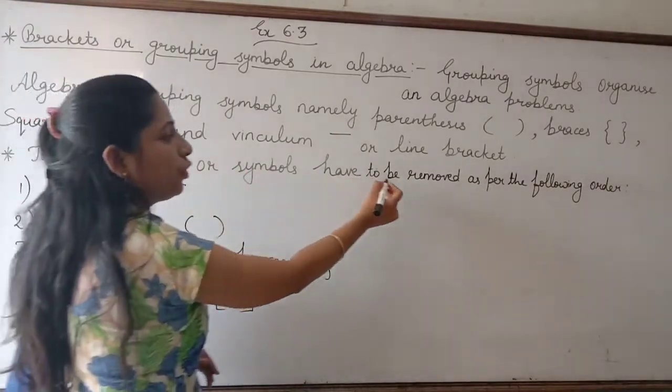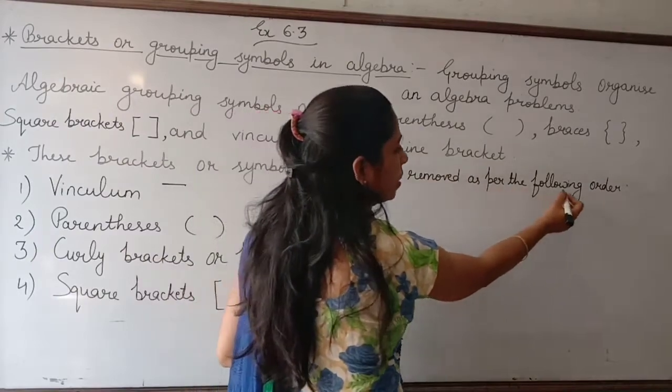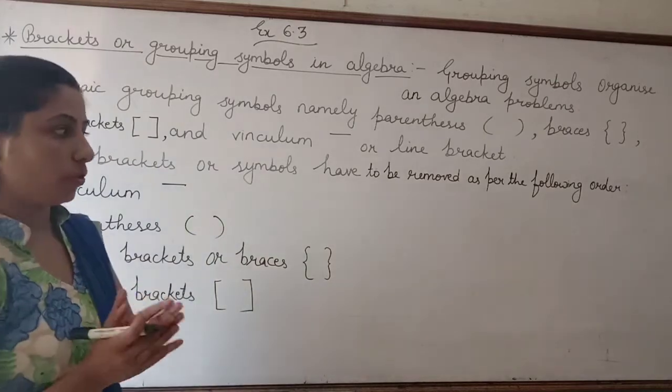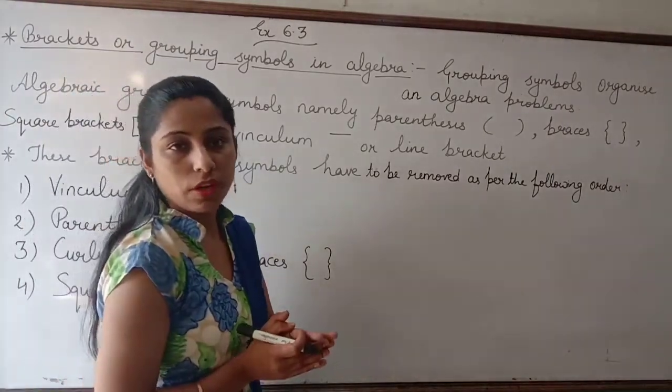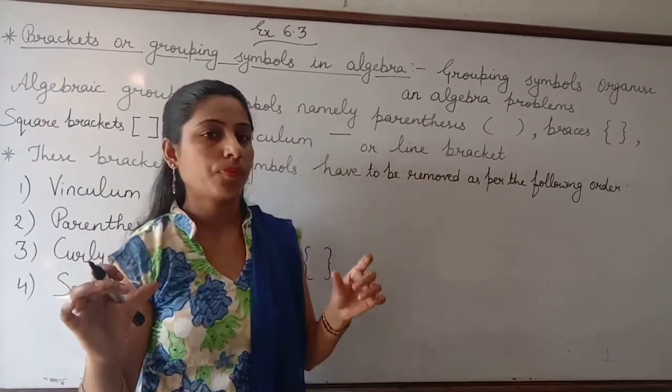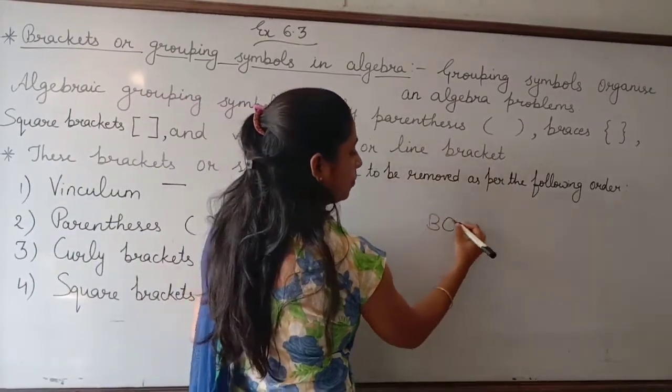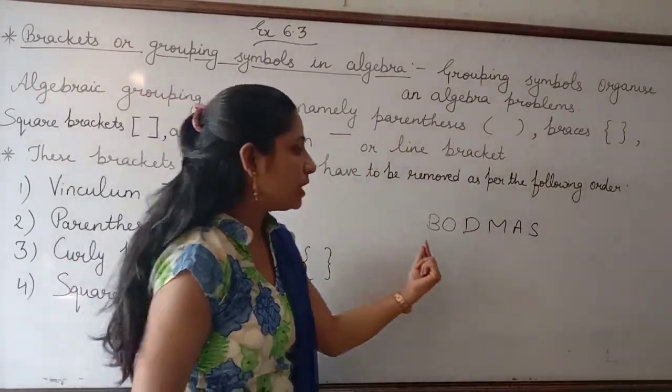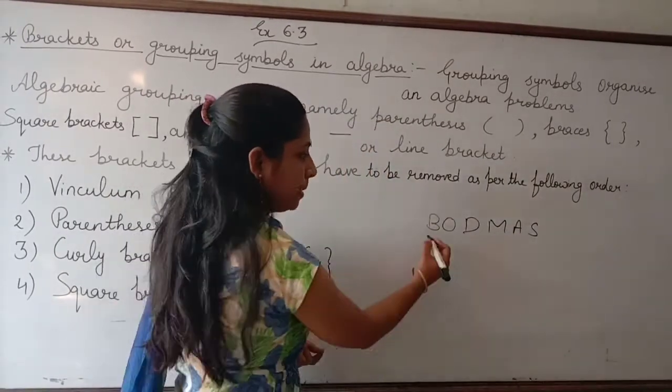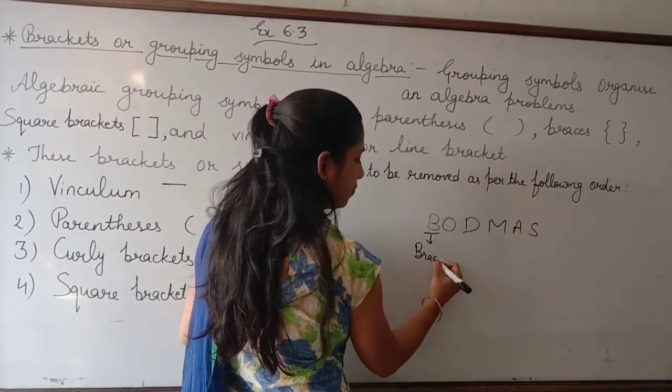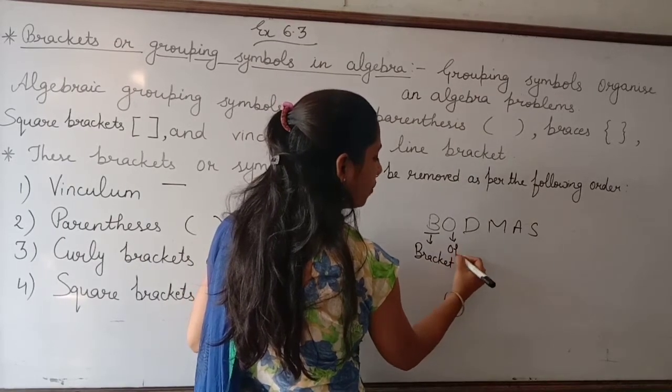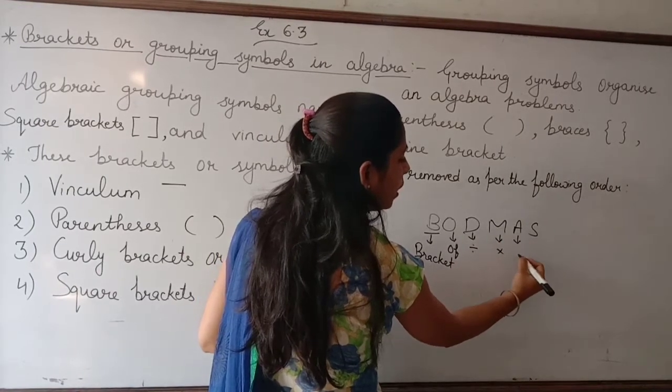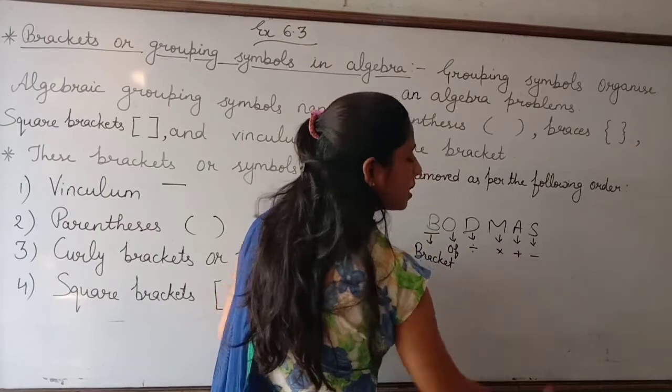These brackets or symbols have to be removed as per the following order. If we have board marks for questions, there is a sequence. These questions follow the order of operations: Bracket, O, D, B - Divide and Multiply, A - Addition, and S - Subtraction.